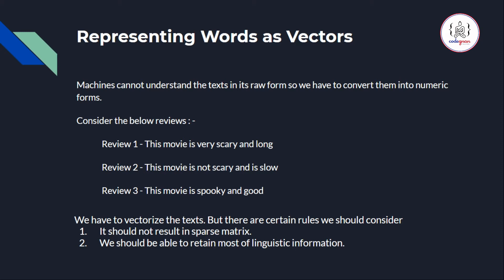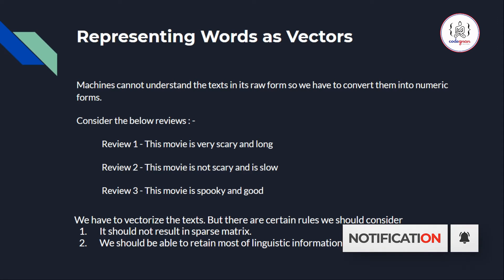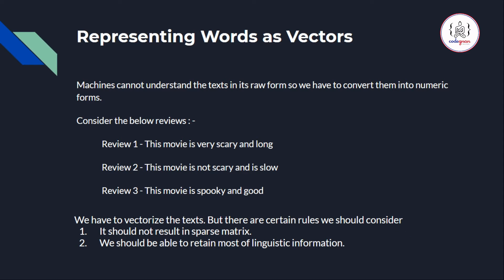We will talk about one such method — Bag of Words. When vectorizing text, there are certain rules to consider. Whatever we are vectorizing should not result in a sparse matrix, which is a matrix that has a lot of zero values. Second, we should be able to retain most of the linguistic or contextual information, because if you just assign some arbitrary number you cannot preserve that contextual information.